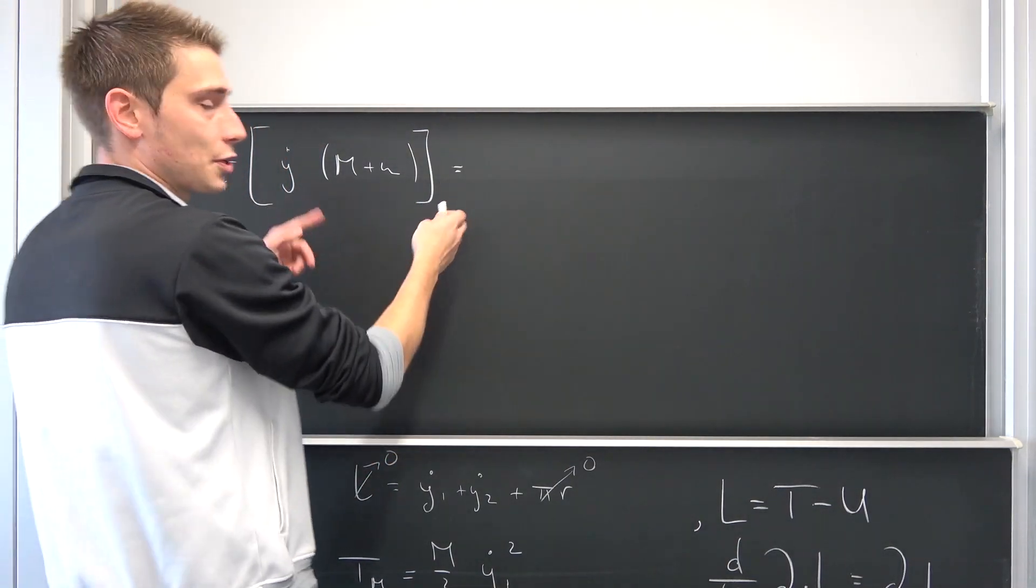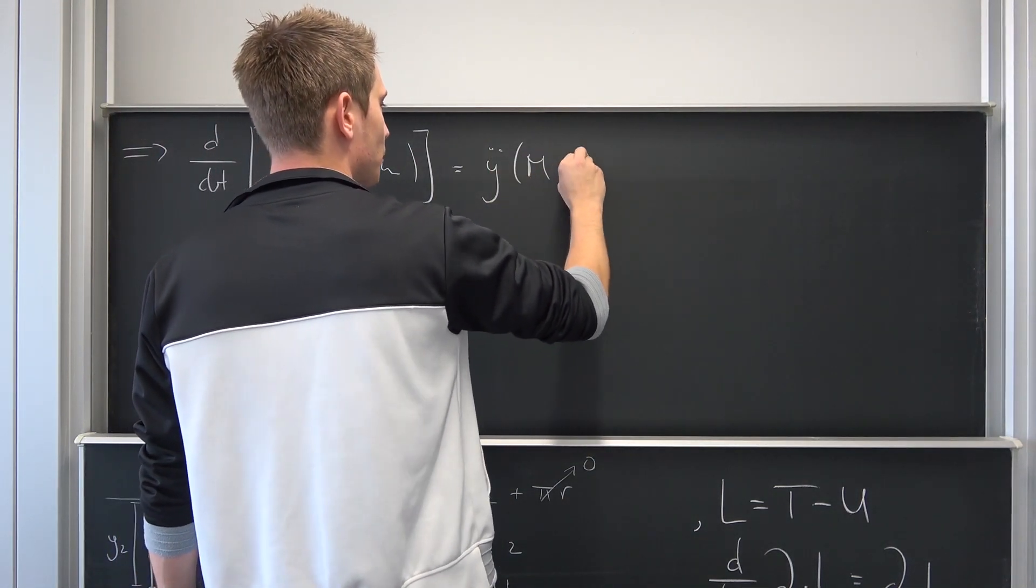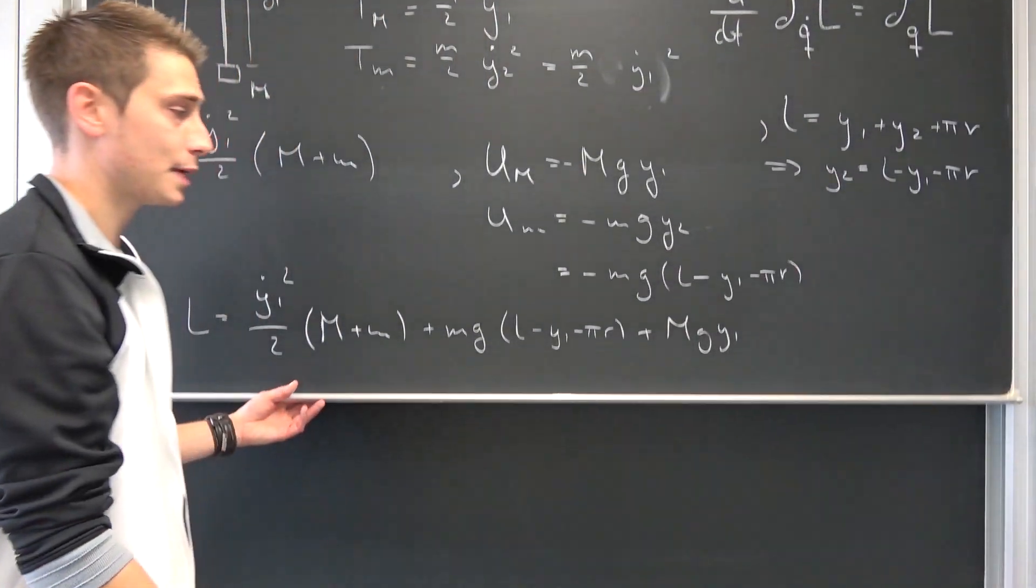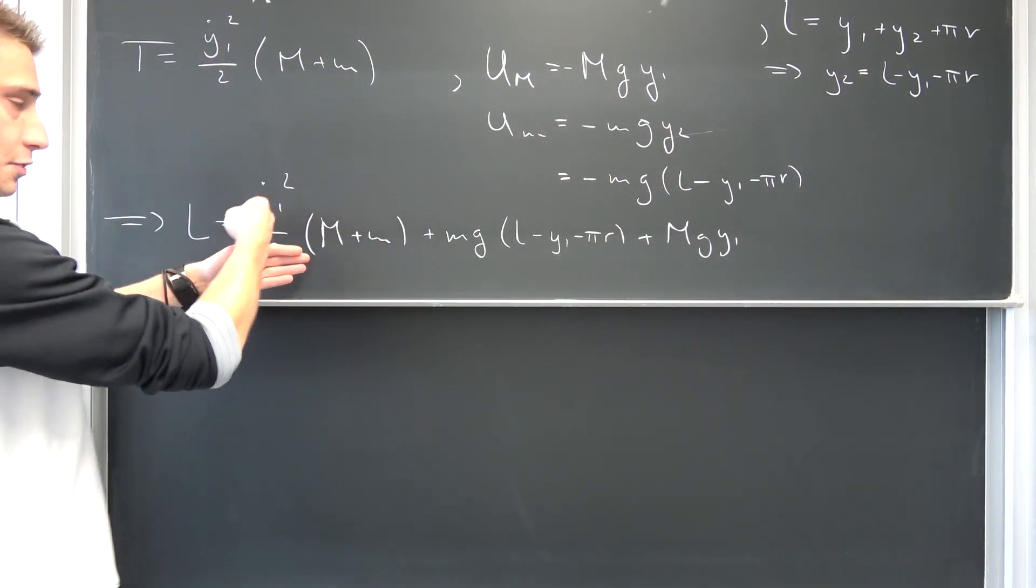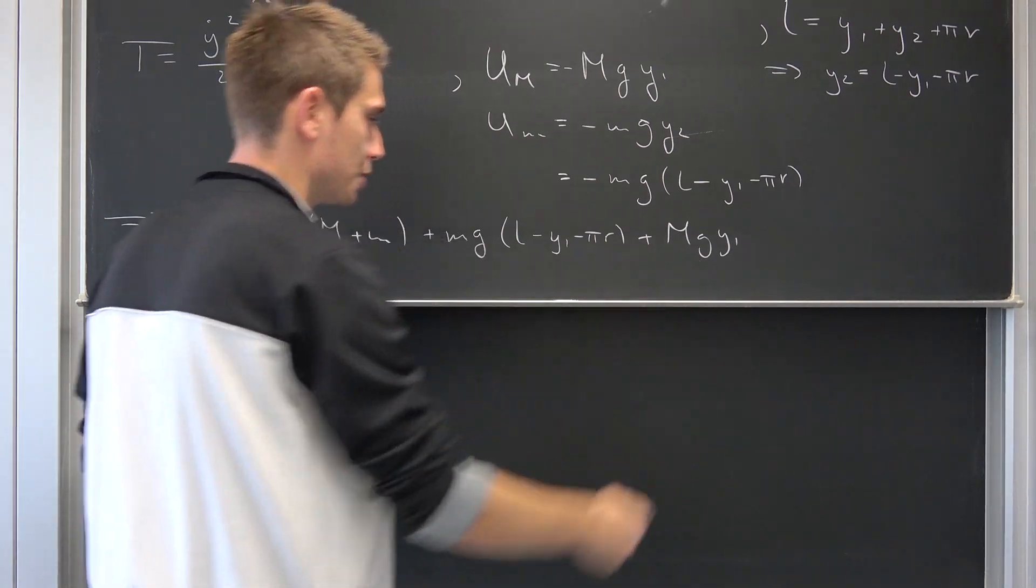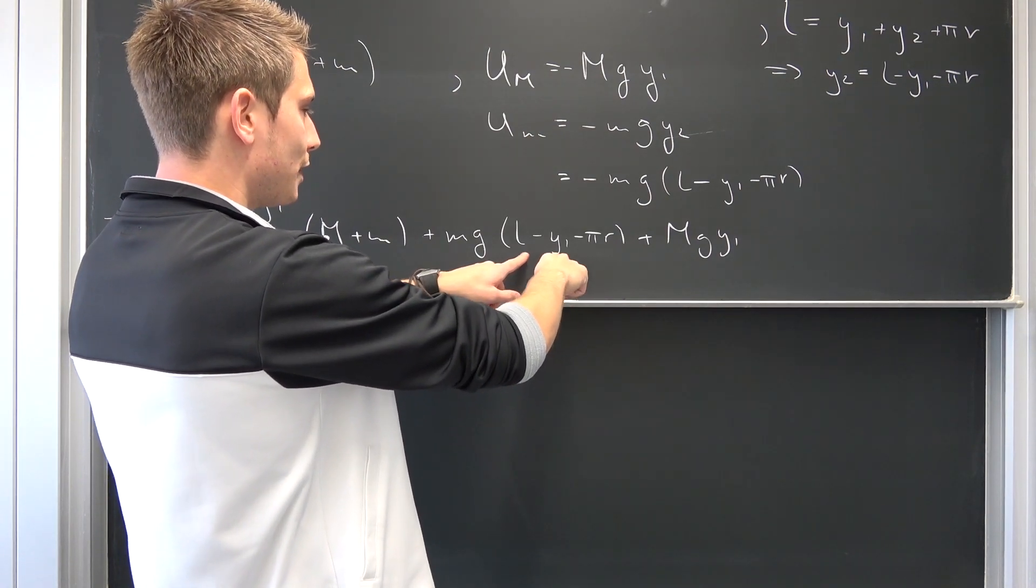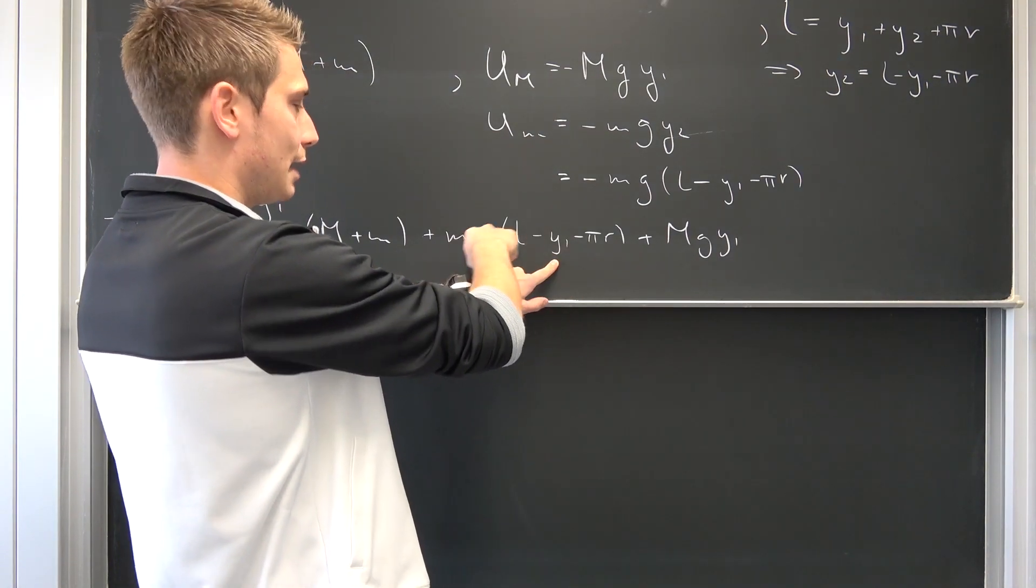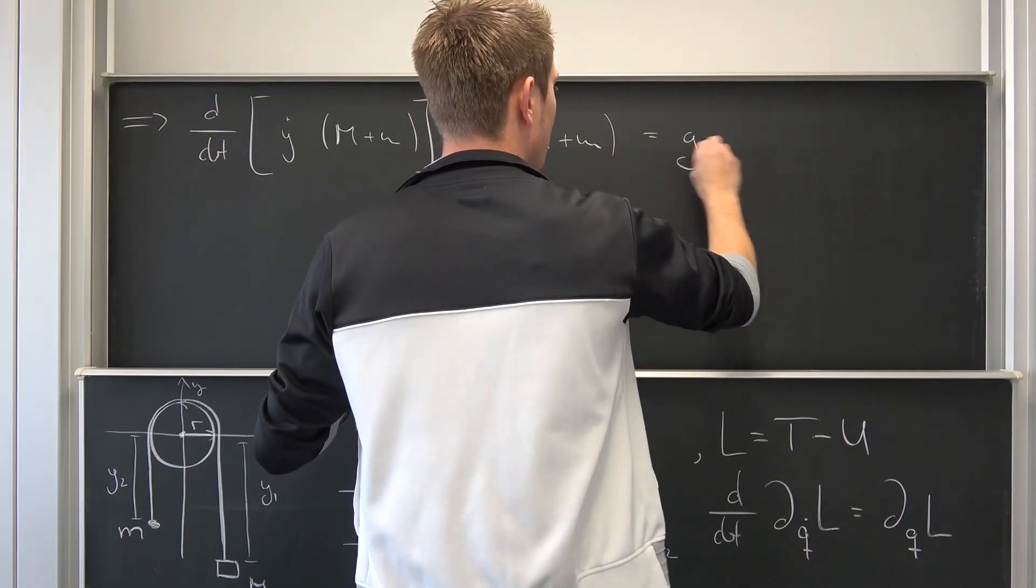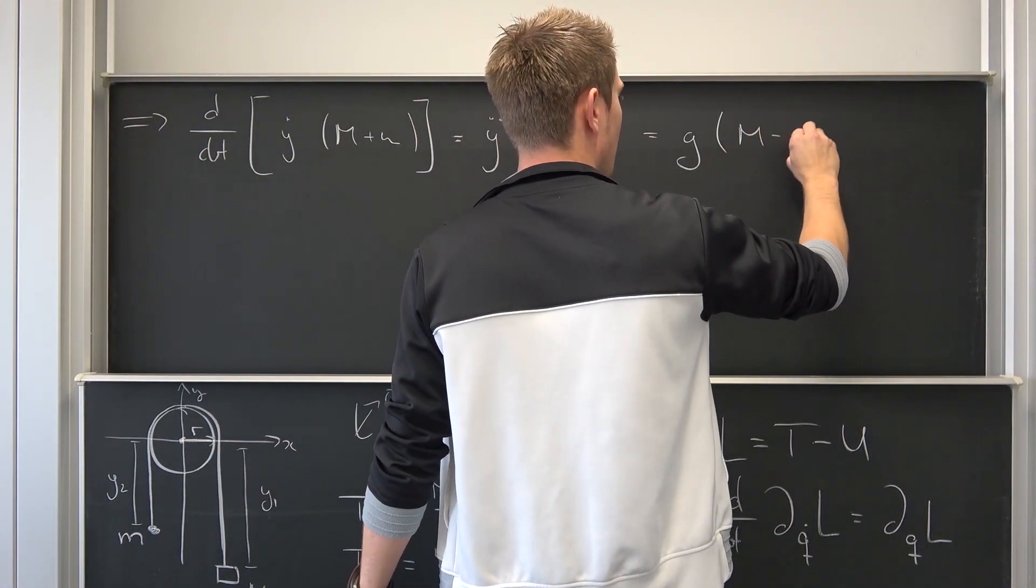Leaving us with simply a force. It does make sense. This is just how it works with Lagrangian. Y1 double dot, big M plus small m. Also, we are going to differentiate our Lagrangian partially with respect to Y1. Meaning all of this is going to vanish in the process. And if we were to differentiate that, this is going to become M times g. L and π times R are just constants. They are going to vanish, and we are going to have negative m times g. Meaning overall g is a common factor. And thus we have small M—no, big M—minus small m.